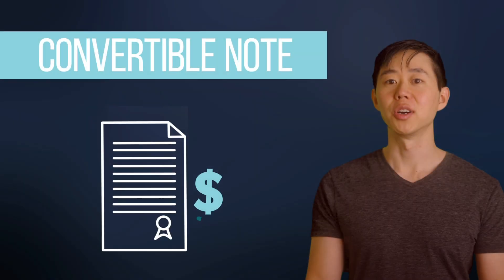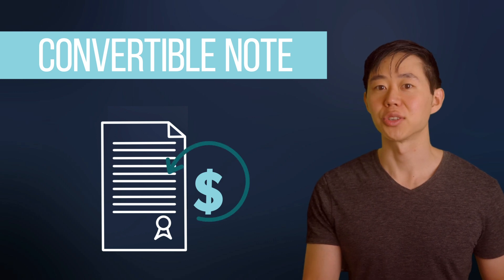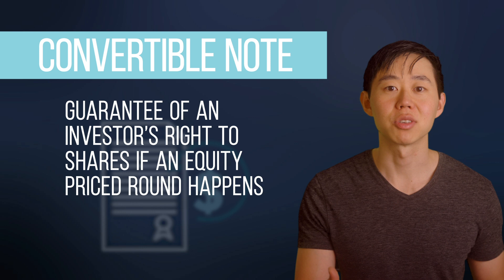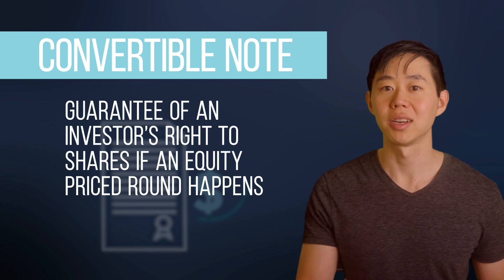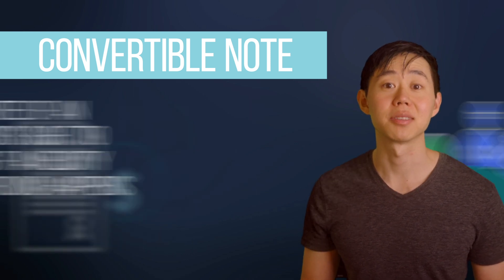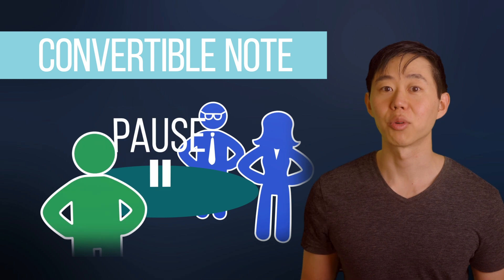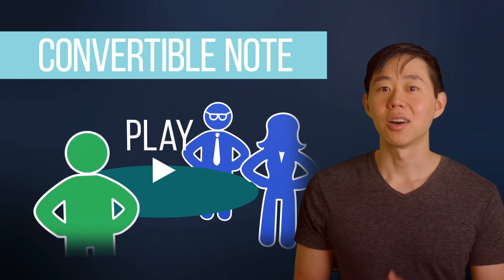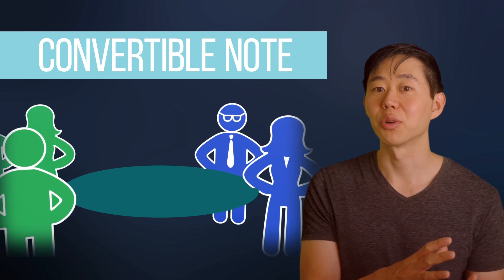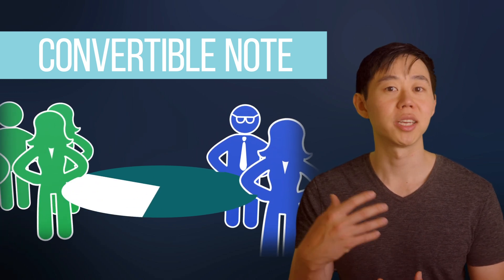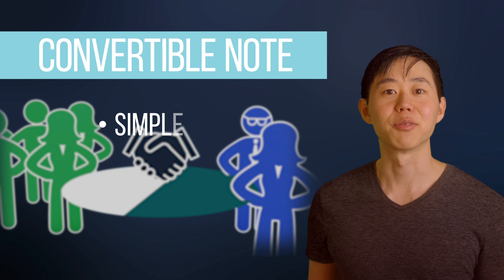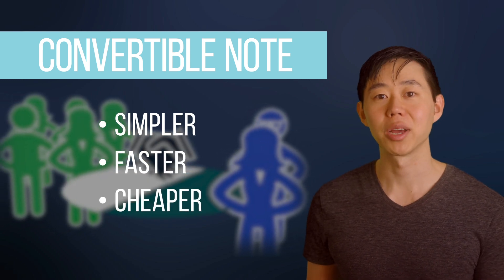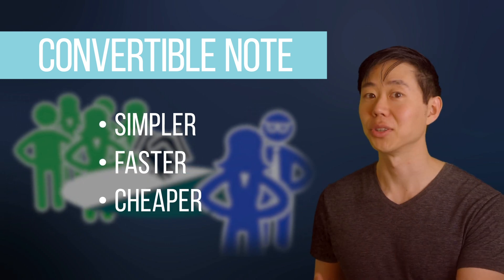With a convertible note, no shares are actually issued or sold. There's just the promise that a VC's investment gives them the right to receive shares as part of an equity price round down the road, if and when that happens. So you're basically tabling most of the hard work of negotiating terms until a later date, when note holders can piggyback off the work of a new lead investor. As a result, the convertible note is simpler, faster, and cheaper — a very common way of raising your first money so you can get back to building as soon as possible.